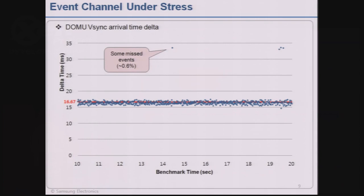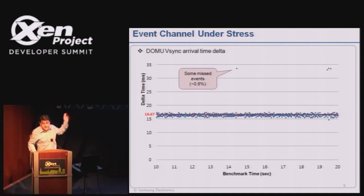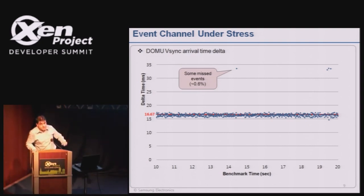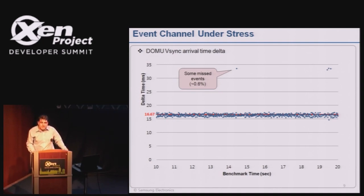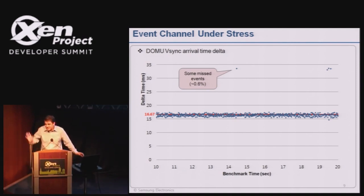Regarding V-Sync reliability: we measured the V-Sync arrival in DOM0 and sent it across the event channel into DOMU. Over about 10 seconds of benchmark - 600 V-Syncs - we measured how long it took for each V-Sync to arrive. Most are within 16.6 milliseconds, centered around 16 milliseconds with a small delay - we can handle that jitter. But a couple of them, less than 0.6 of a percent, appear to be missing. Further investigation is needed, but 99.4% is going through fine.